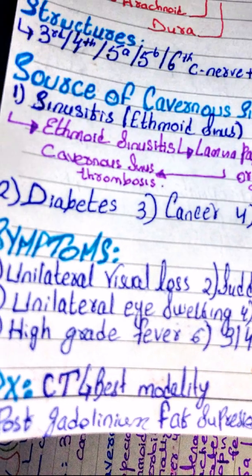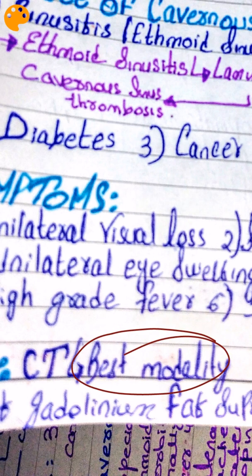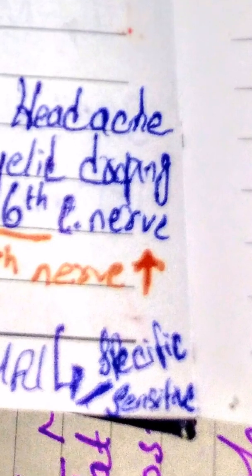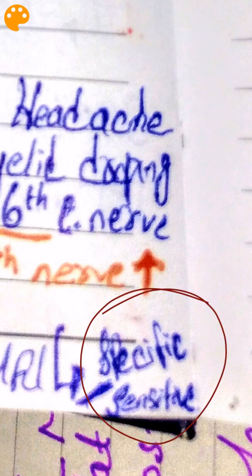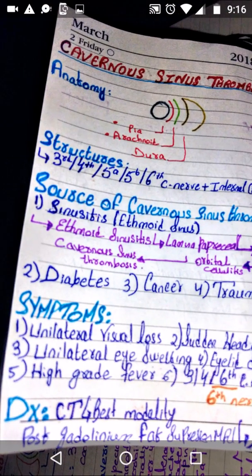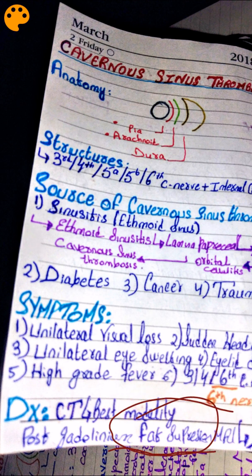Now let's see how diagnosis is made in cavernous sinus thrombosis. CT is the best initial modality because it is less costly and less time-consuming. Post-gadolinium fat suppression MRI is the most specific and sensitive test for cavernous sinus thrombosis. Fat suppression is used because you need to suppress the normal orbital fat present in the eye in order to visualize thrombosis clearly, and gadolinium is the contrast dye used.